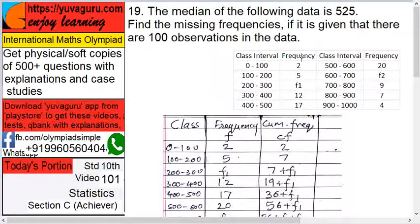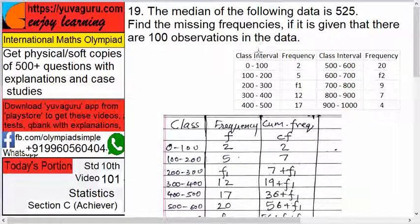Frequency is always F and the class interval or the other figure given is always X. Right, so this is X. Arrange X serially.